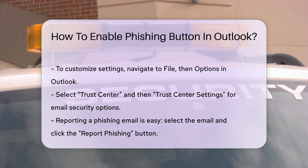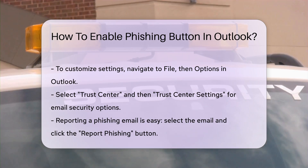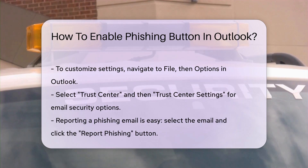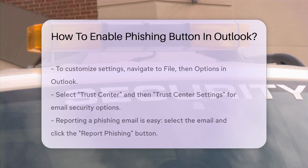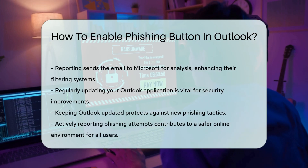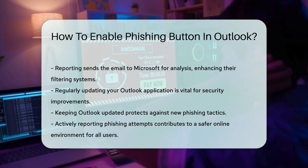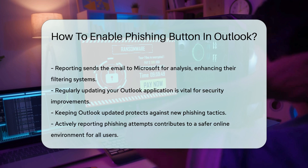After enabling the feature, you can easily report suspicious emails. When you receive an email that seems fraudulent, simply select it and click the Report Phishing button. This action sends the email to Microsoft for analysis and helps improve their filtering systems. Regularly updating your Outlook application is also crucial, as updates often include security enhancements that protect against evolving phishing tactics.